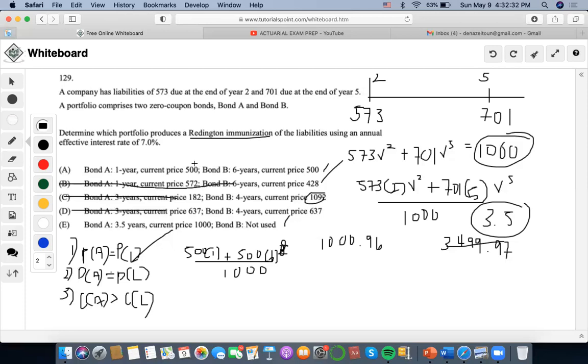Remember, no discounting because these are already at their current prices. Now for this one, it'd be 1000 times 3.5 divided by 1000, which is 3.5, so E is kept. So we got this one out, but now let's find convexity.